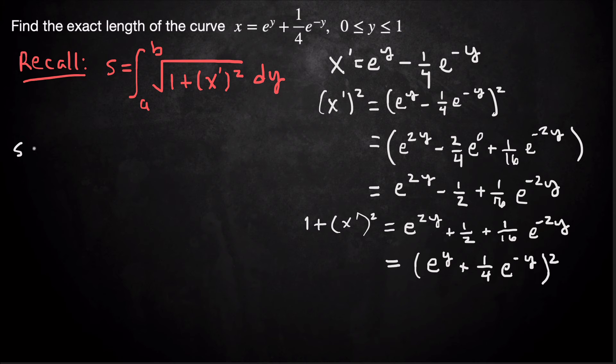So our arc length s, in this case, is going to be the integral from 0 to 1, √((e^y + (1/4)e^(-y))²) dy. And that's a 4. So this is equal to, well...